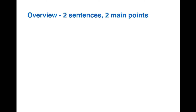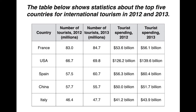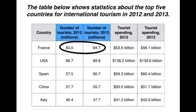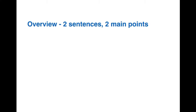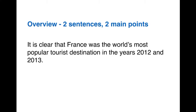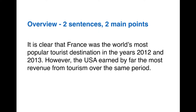Now we can move on to the overview — two sentences, two main points. I'm going to keep this simple and choose one main point about numbers of tourists, which will be France with the highest numbers, and one main point about tourist spending, which will be the USA with the highest numbers. First sentence: 'It is clear that France was the world's most popular tourist destination in the years 2012 and 2013.' Next sentence: 'However, the USA earned by far the most revenue from tourism over the same period.' That's the overview finished.